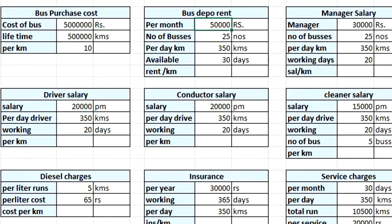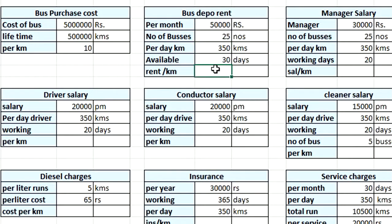Second, assume that the rent for the depot where we keep the bus is ₹50,000 per month, and in that place we stop 25 buses. Each bus travels 350 kilometers per day, and assuming 30 days a month, the rent per kilometer = monthly rent ÷ (number of buses × 350 km × 30 days) = ₹0.19 per kilometer.